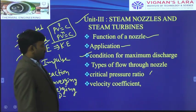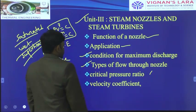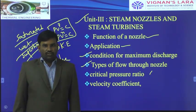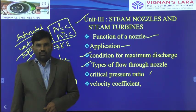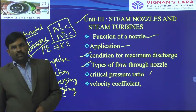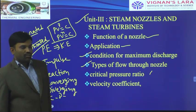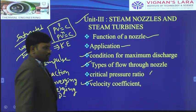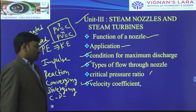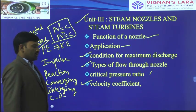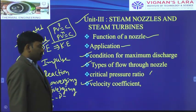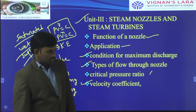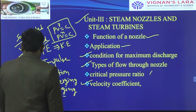Types of flow through the nozzle: during the flow of steam inside the nozzle body, different flows are generated — saturated flow and superheated flow. We will also look at critical pressure ratio: the definition of critical pressure ratio, and the velocity coefficient. During the flow of steam from the nozzle to the turbine, different velocities are produced, and based on those velocities we generate the work output from the turbine.